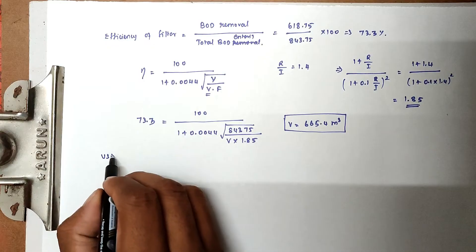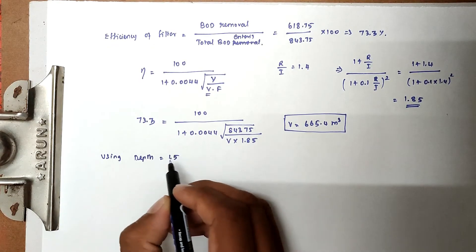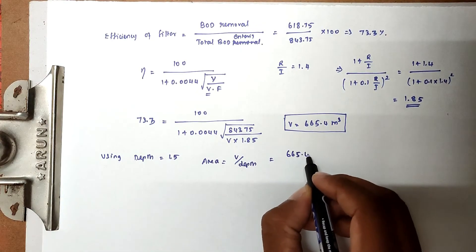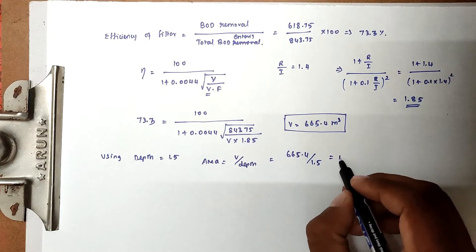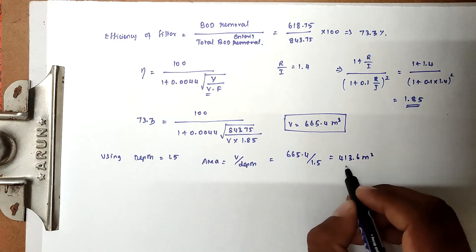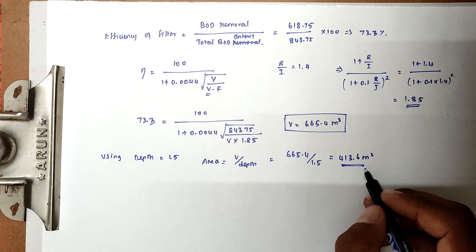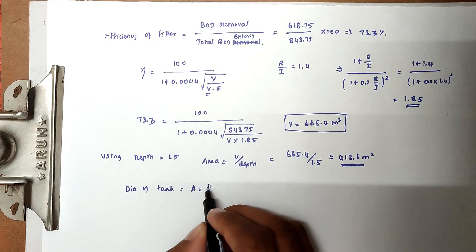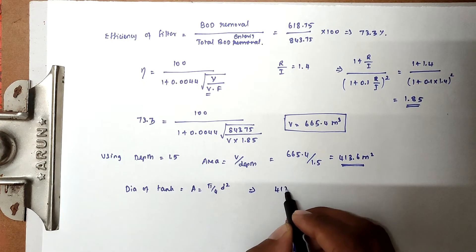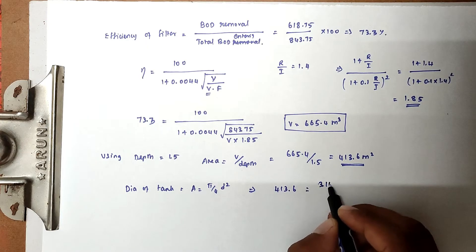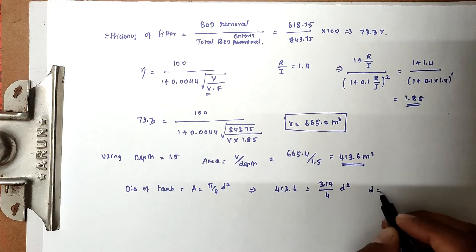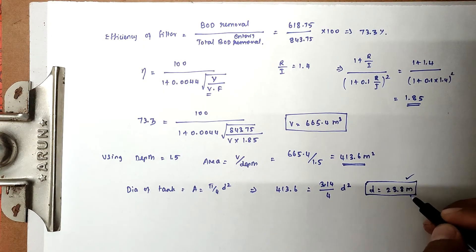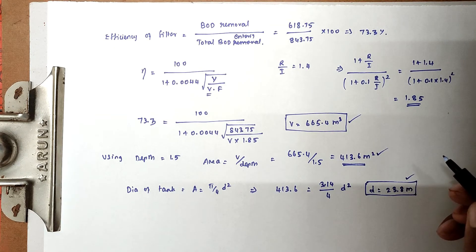Using depth equal to 1.5 m, area equals volume divided by depth: 665.4 / 1.5 = 443.6 m². The diameter of the tank is found from area = π/4 × D²: 443.6 = 3.14/4 × D², giving D = 23.8 meters. This completes the high rate trickling filter sizing.